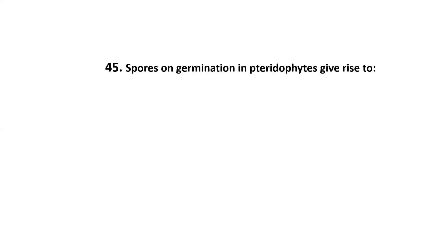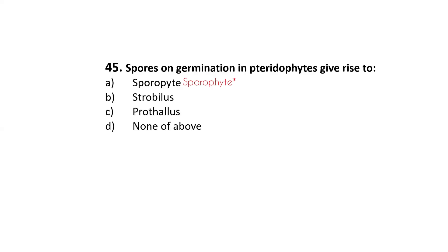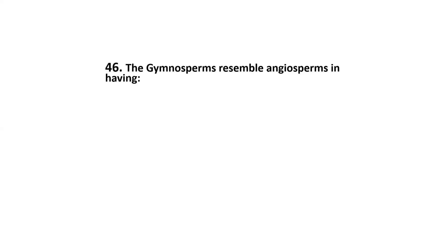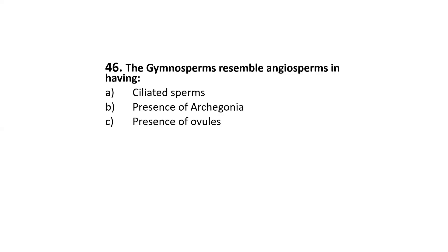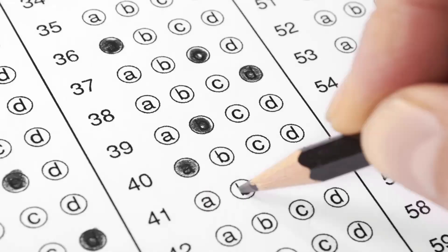Next: spores on germination in pteridophytes give rise to — sporophyte, strobilus, prothallus, or none of above? The correct option is C: prothallus. The last one: gymnosperms resemble angiosperms in having — ciliated sperms, presence of archegonia, presence of ovules, or presence of monoxylic wood? The correct option is C: presence of ovules.